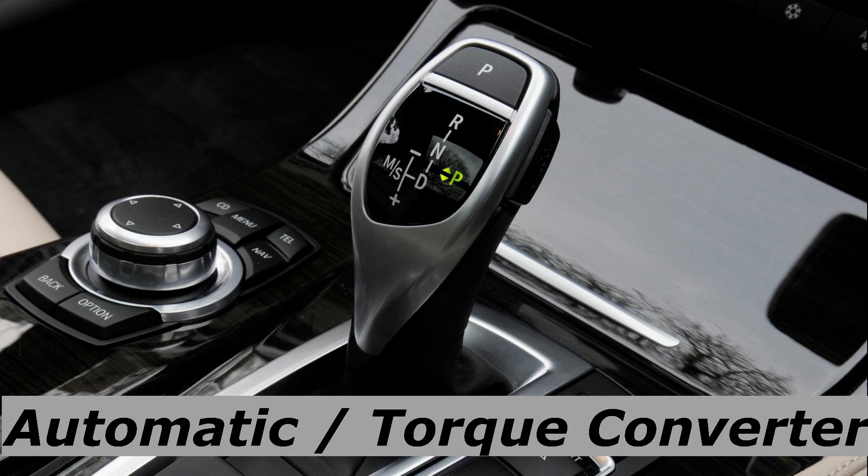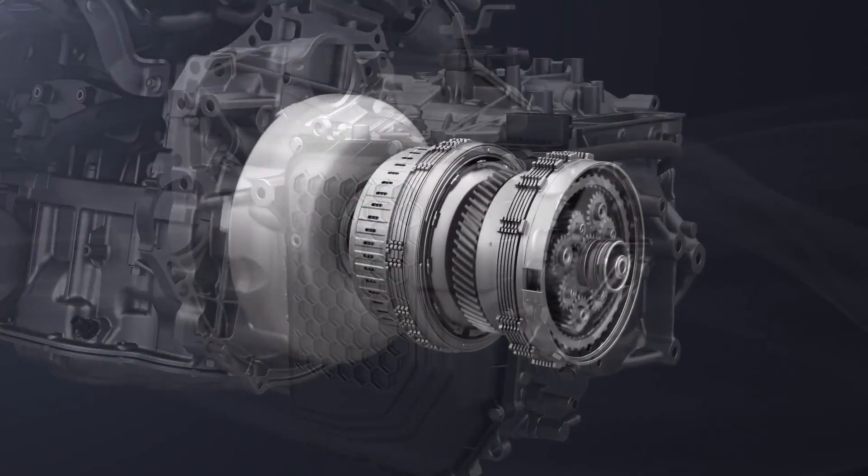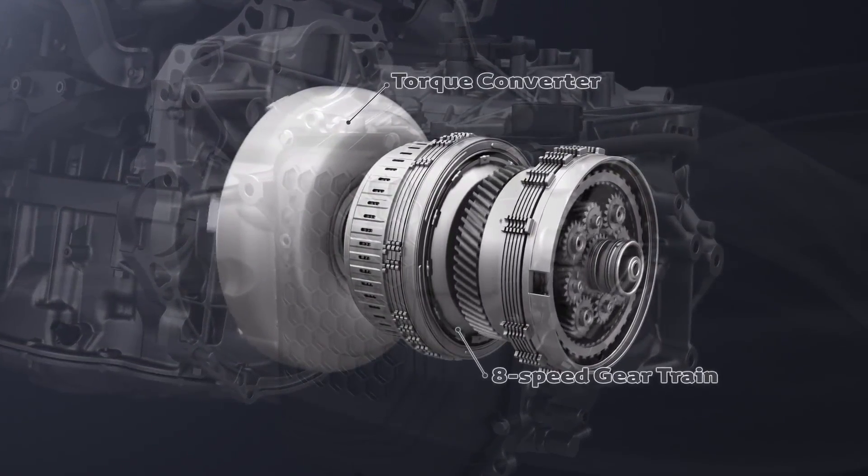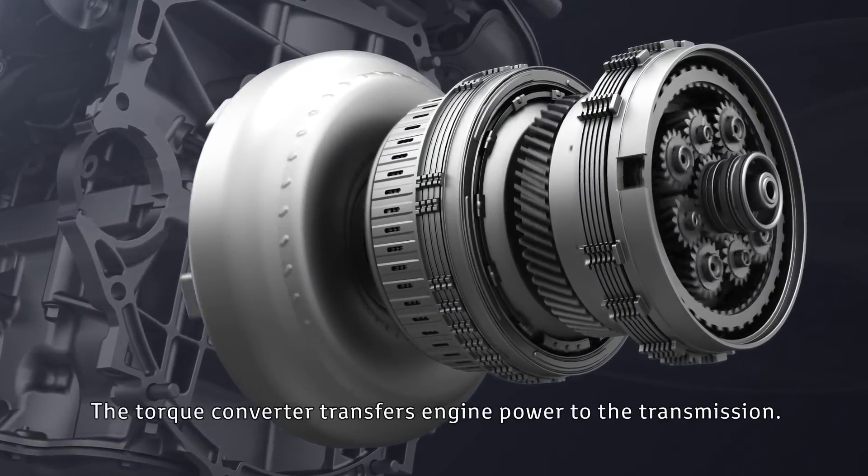Second one in the list is automatic transmission. The automatic transmission refers to torque converter. Torque converter is basically a fluid coupling where the gears in the transmission are connected to the engine through torque converter, which basically acts as a clutch.